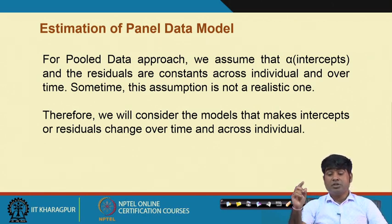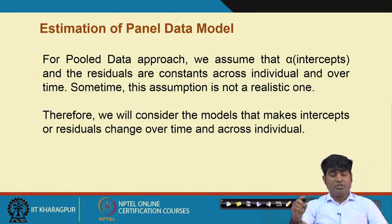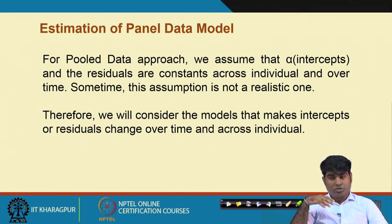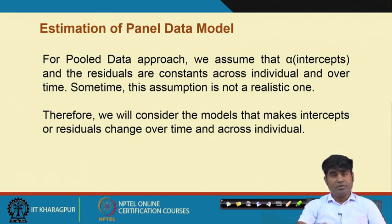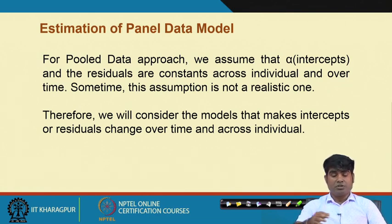For the pool data approach we assume that the intercept and the residuals are constant across individuals and over time. Sometimes these assumptions are not realistic. That is how panel data comes forward and solves the problems with fewer assumptions and in a more solid way to address the same problems with a different setup and different structure. Therefore, we can consider that models that make the intercept or residuals change over time and across individuals are called panel data models.